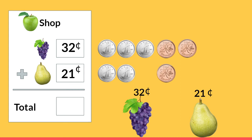When we add those together to get our total — how much money we need to give to the cashier — we're going to start by counting our pennies together. We have two pennies plus one more. Two plus one is three. And now we're going to add our dimes together. We have three dimes plus two dimes and that equals five, or 50 cents. So our total is 53 cents. That's how much we need to give to the cashier to buy grapes and a pear.